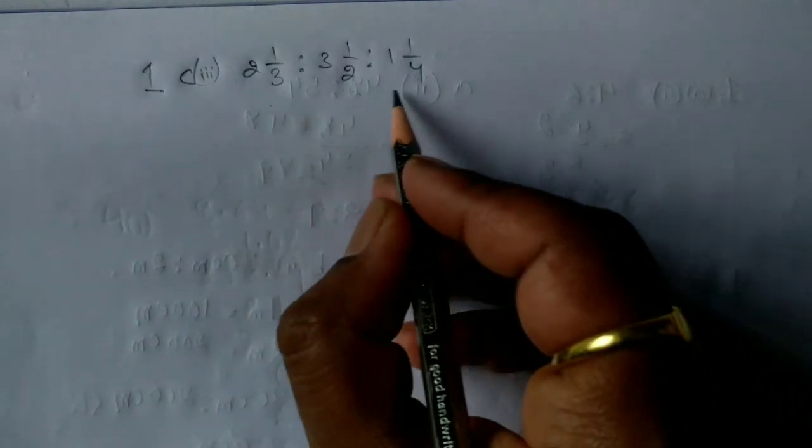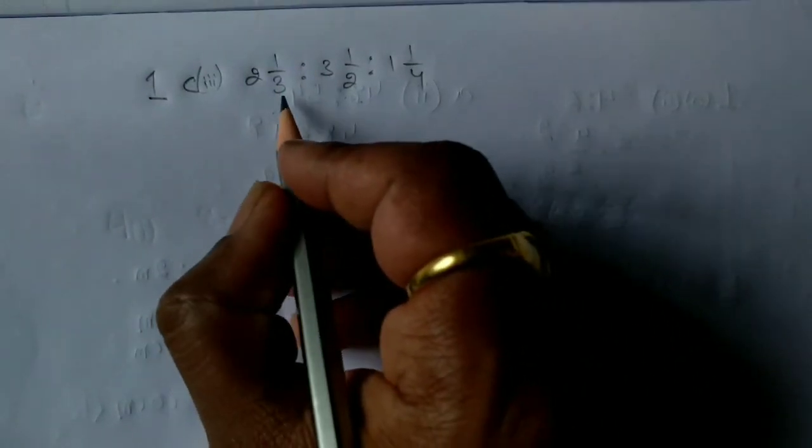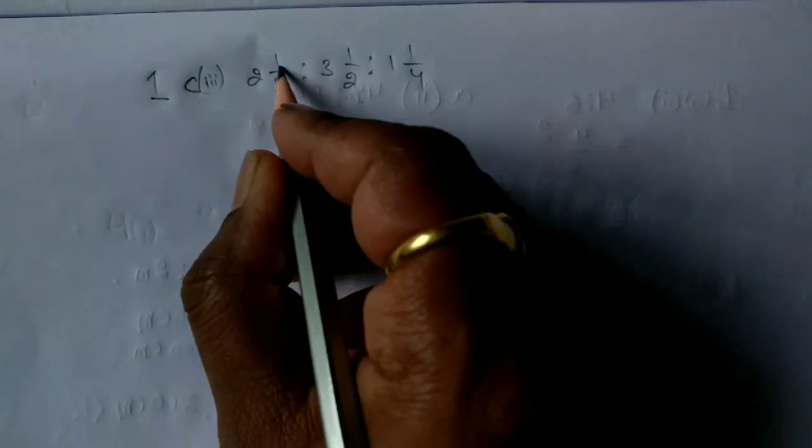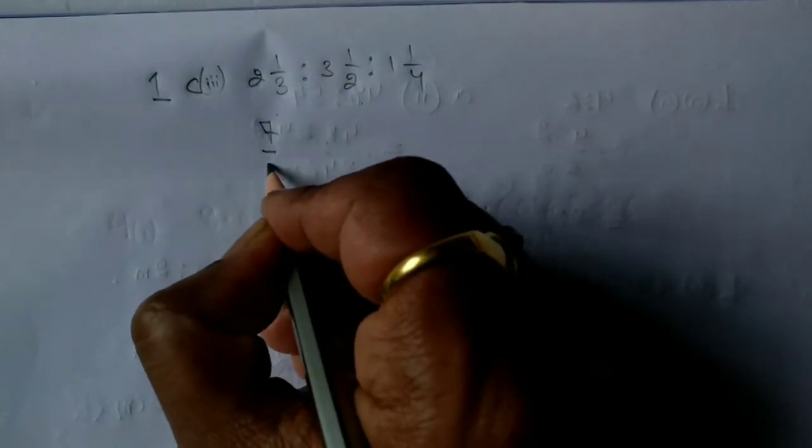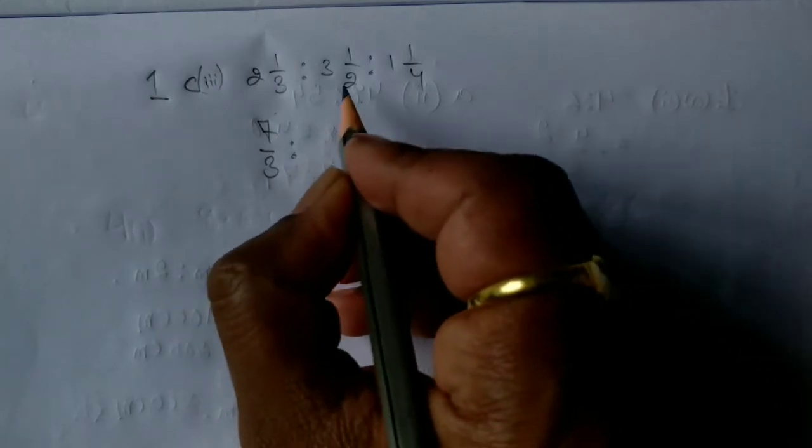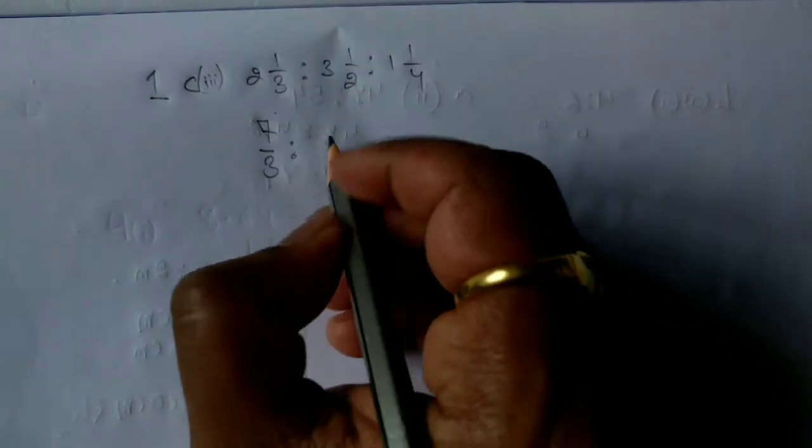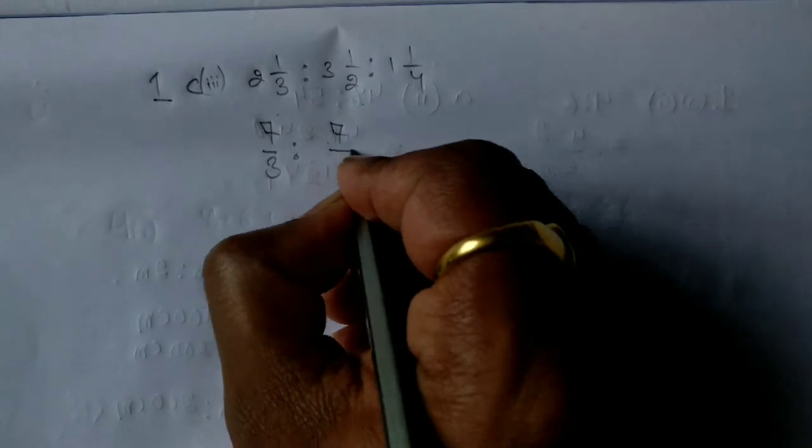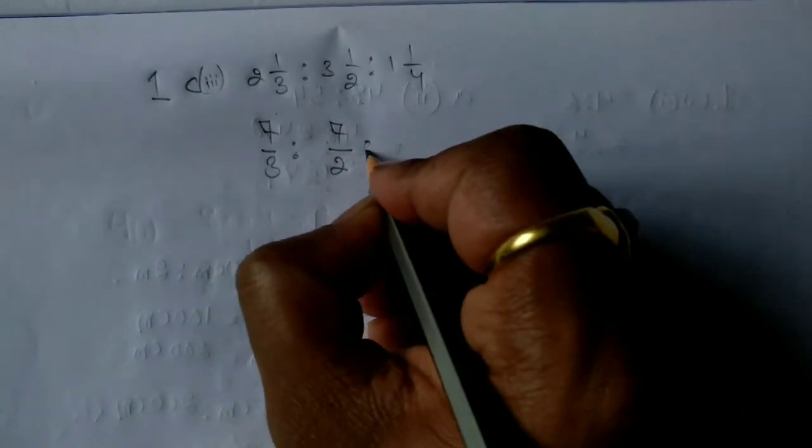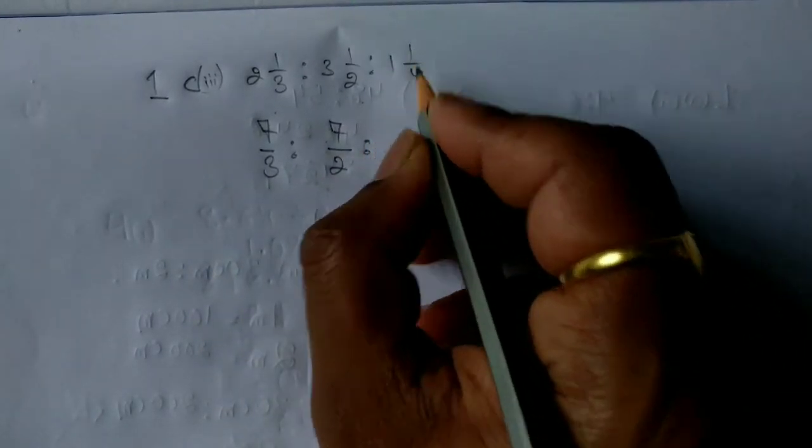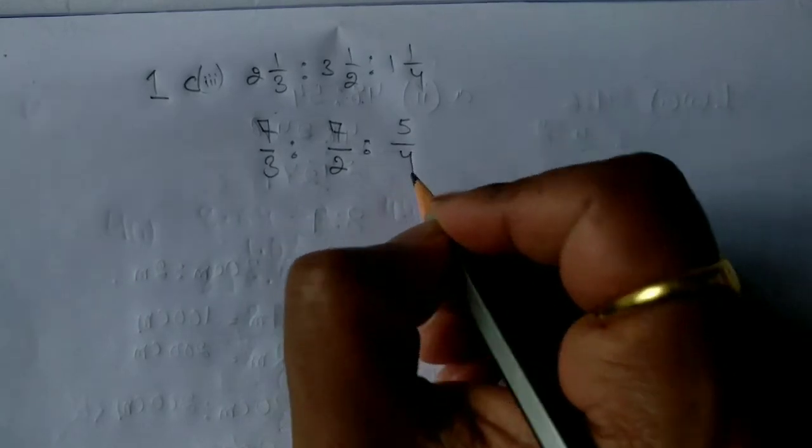For this there is a new method. In this case, first step will be convert all the mixed fractions into improper fractions. First, 3 into 2 is 6 plus 1, 7 upon 3 is to 2 into 3 is 6 plus 1, again 7 upon 2 is to 4 into 1 is 4 plus 1, that is 5 upon 4. So we are getting three fractions.